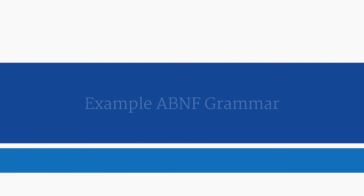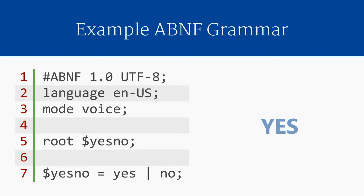Just to give you an idea of what a grammar looks like, let's go through a very simple grammar in the ABNF format. This grammar will allow users to say either the word yes or the word no. Grammars are a very simple sort of programming language, so they follow many conventions found in traditional software development. The first line declares that it is an ABNF grammar using version 1.0 of the SRGS specification. So far there is only one version, which means all grammars are ABNF 1.0. There is an optional encoding declaration, and here we are using the UTF-8 format. Finally, you will notice that the line ends in a semicolon, as all lines in an ABNF grammar must do.